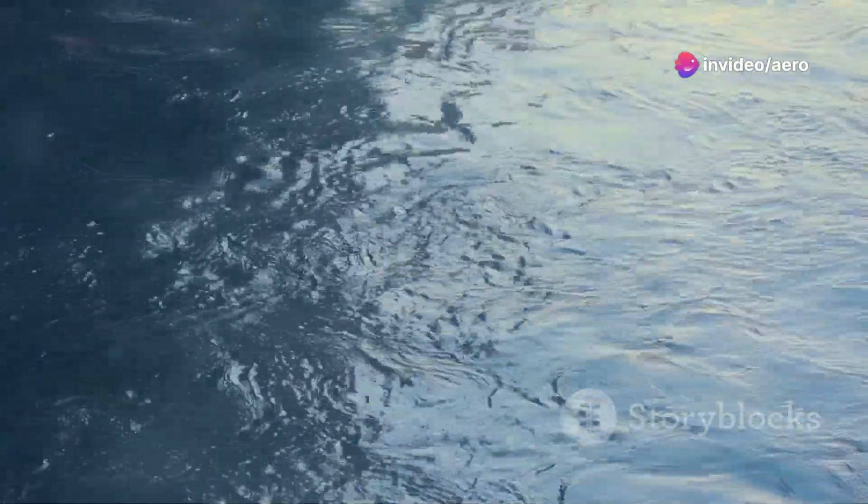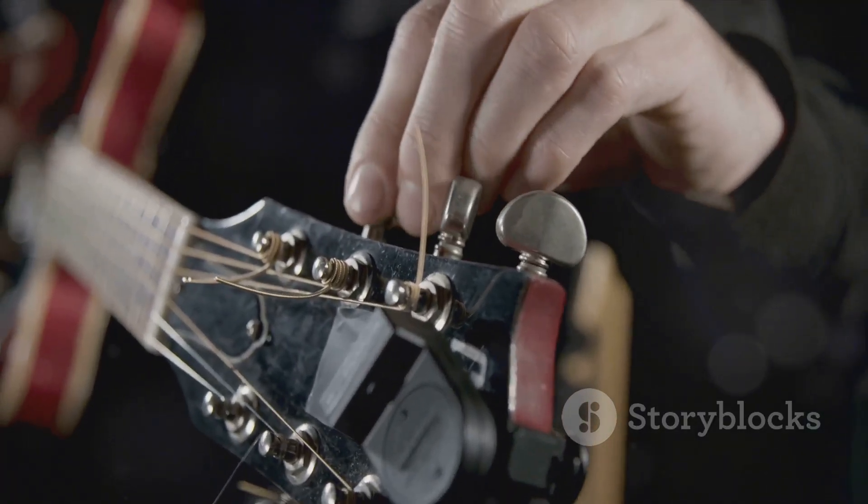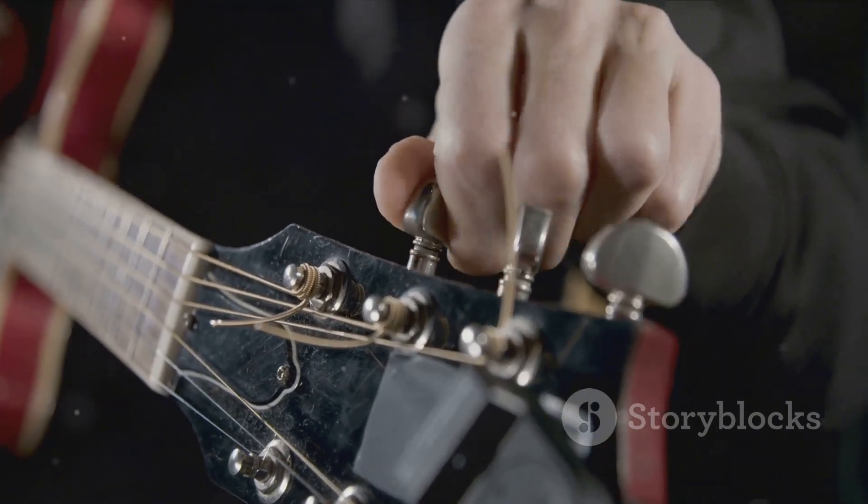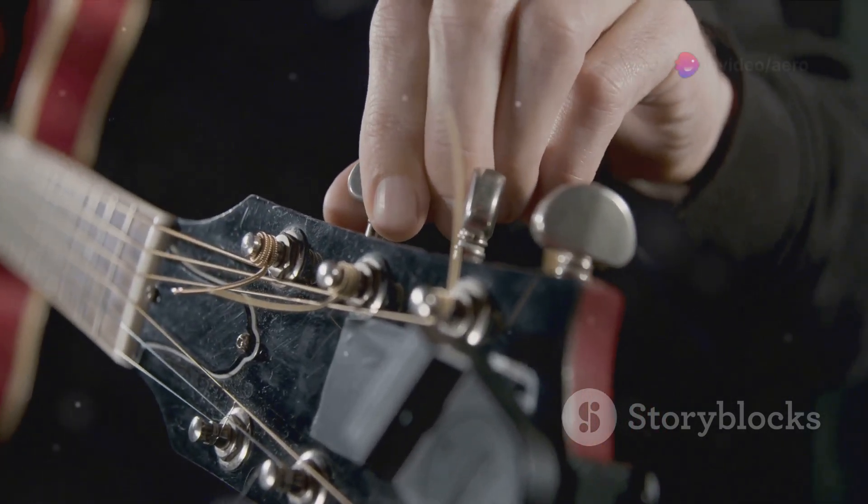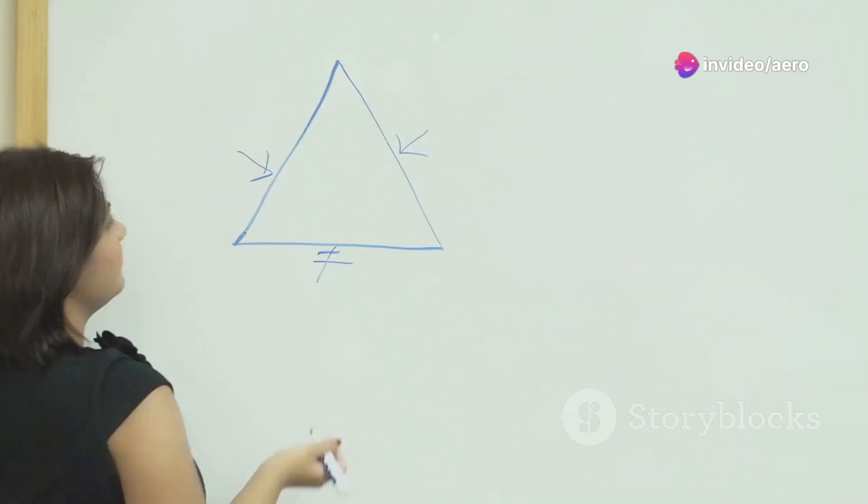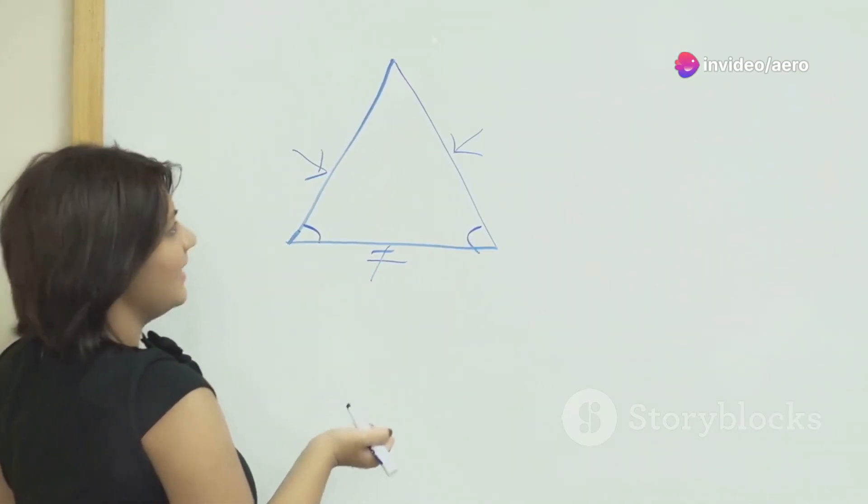In the realm of physics, trigonometry is indispensable for analysing wave patterns, from the ripples on a pond to the seismic waves beneath the Earth. It helps physicists understand phenomena like sound, light and radiation, all of which exhibit wave-like behaviours. Moreover, in the world of music, trigonometry assists in crafting perfect harmonies and tuning instruments, making it a surprising but vital tool in music theory. Trigonometry helps us reach the stars and understand the very waves of sound.